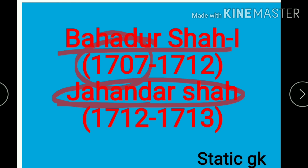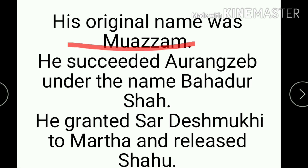Bahadur Shah First came to throne in 1707. He was the first Later Mughal. He ruled from 1707 to 1712. His real name was Moazzam. Bahadur Shah First succeeded Aurangzeb and came to throne under the title Bahadur Shah.